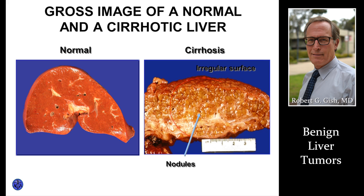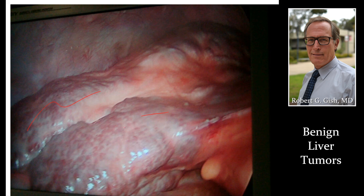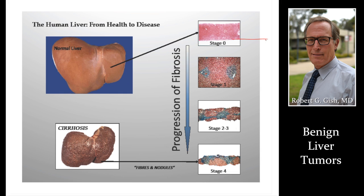This is a cirrhotic liver, and this is where the risk for tumors — specifically liver cancer — arises. Sometimes benign tumors can be hidden inside the cirrhosis. It's much easier to see benign tumors in the background of a normal liver. It's when people get cirrhosis that we worry about liver cancer. Please see our separate audio-video presentation on hepatocellular carcinoma.